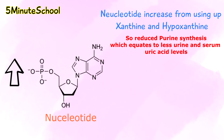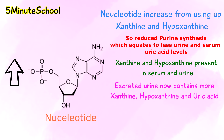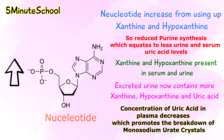Now that allopurinol has reduced the levels of uric acid, we have an increase in serum and urine concentrations of hypoxanthine and xanthine, because they weren't used. The contents of excreted urine are now hypoxanthine, xanthine, and uric acid. Because each of these substances has its own solubility, the concentration of uric acid in the plasma is decreased.